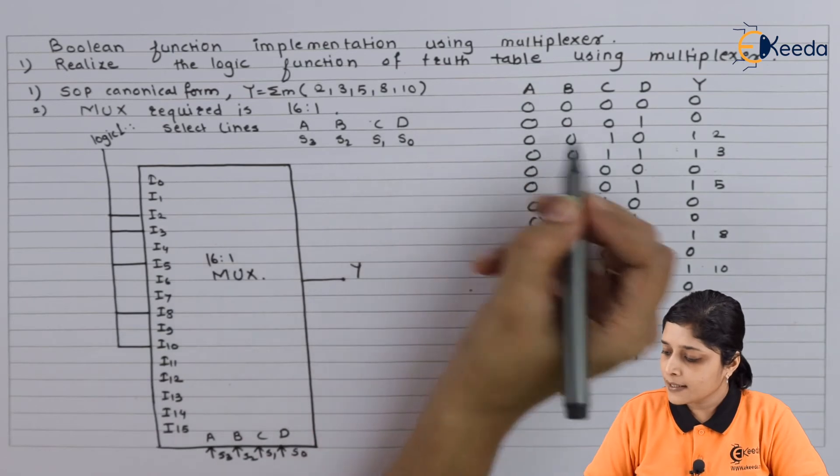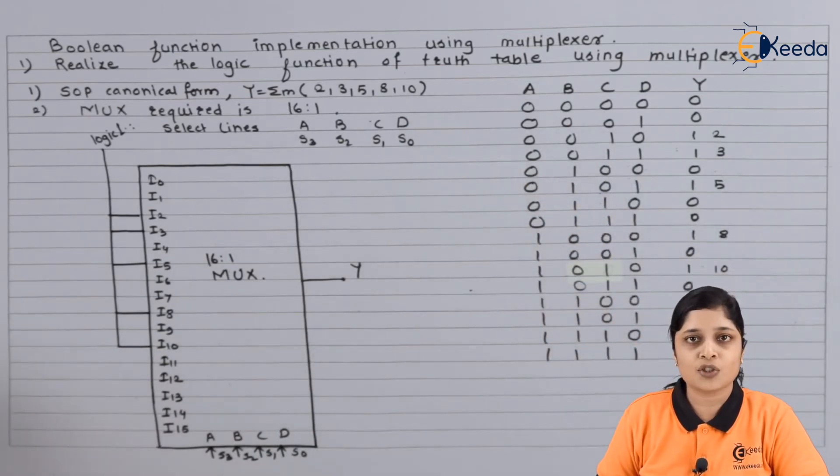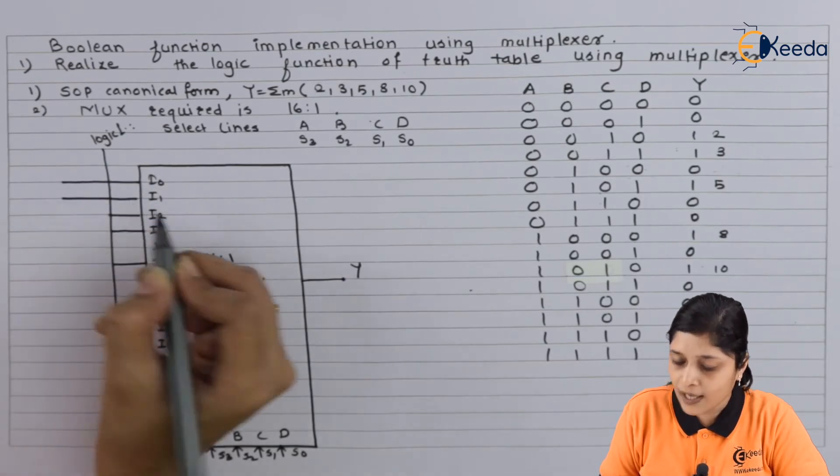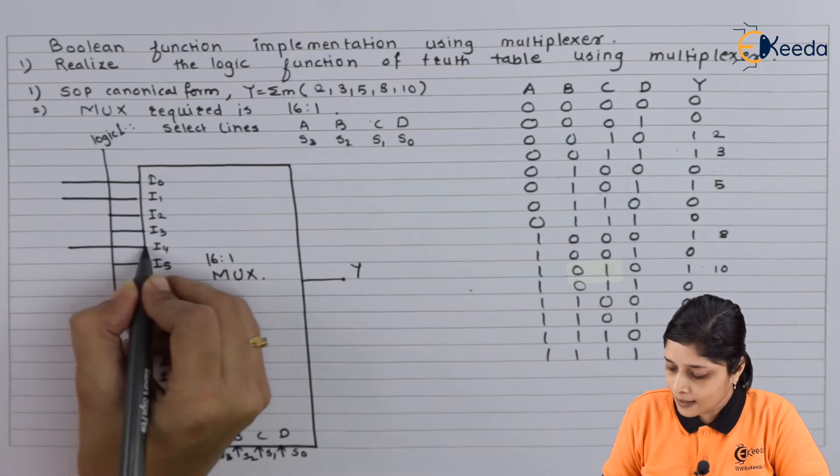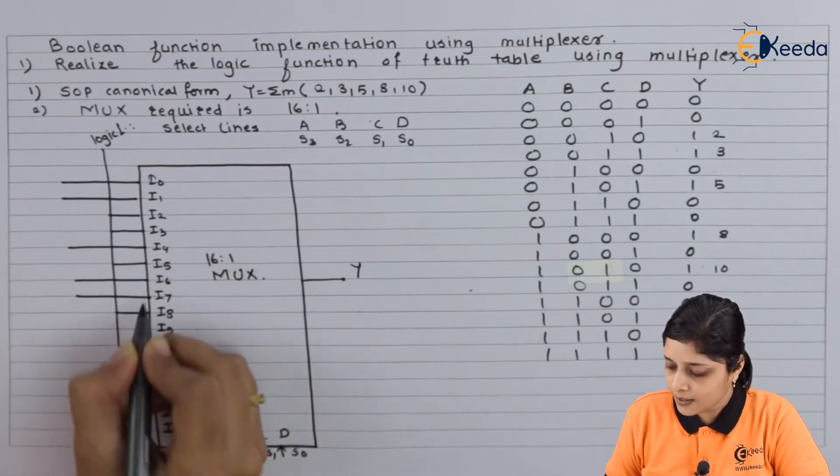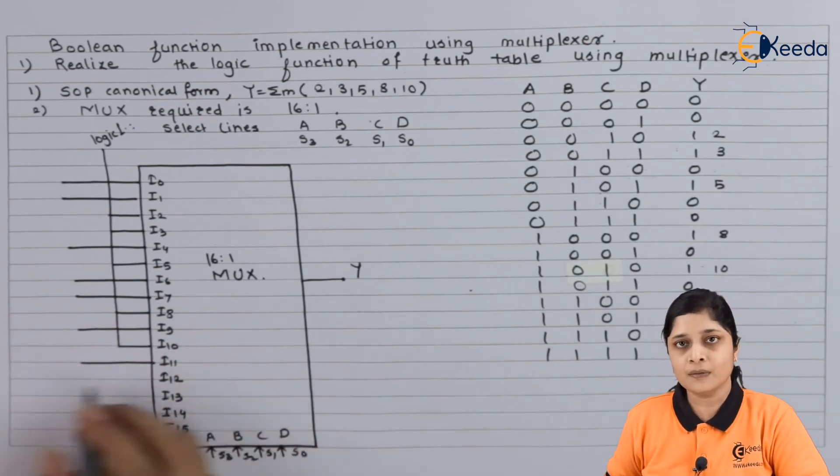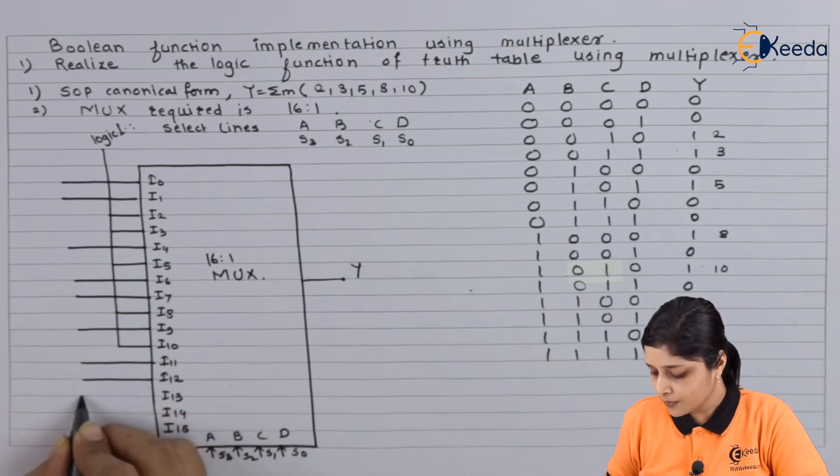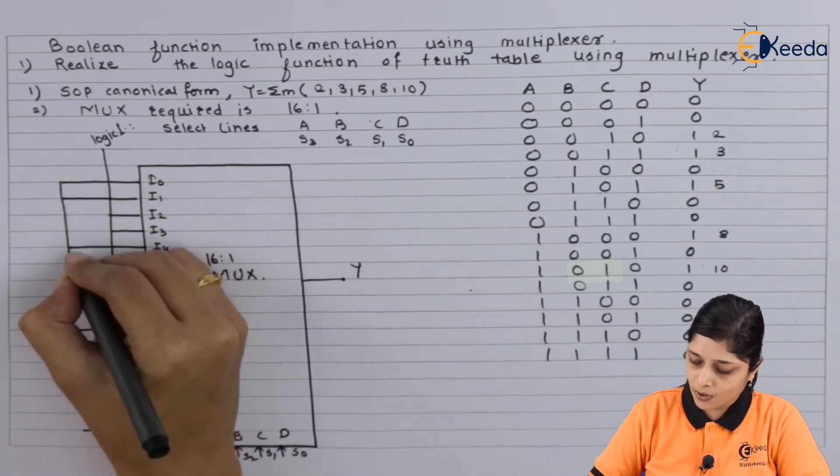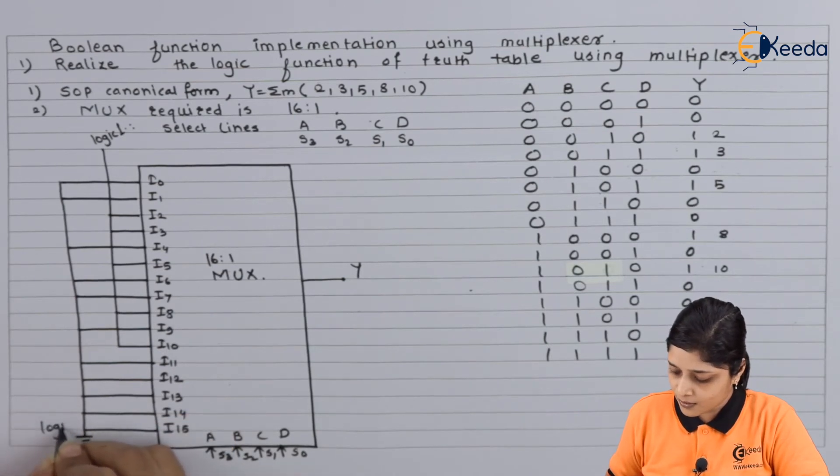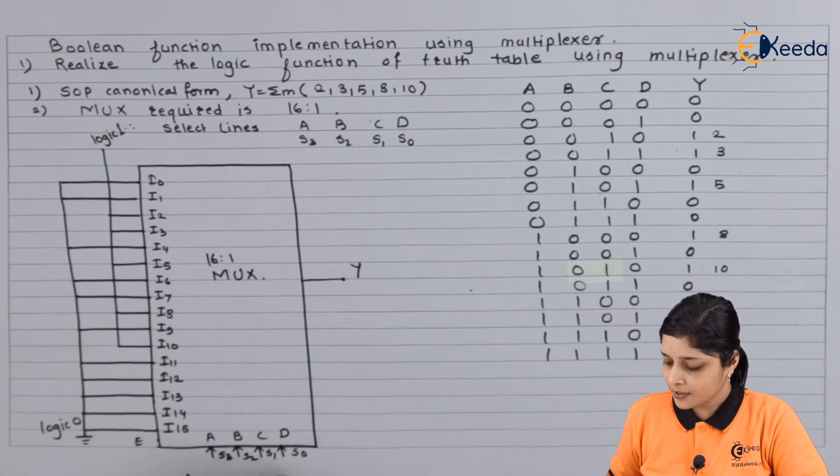Now remaining terms you have to connect to logic 0: I0, I1, I4, I6, I7, then I9, I11, after that I12, I13, I14, and I15. All these lines you have to connect to logic 0, and the enable terminal is always logic 1.